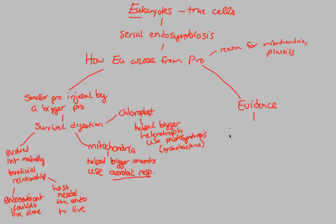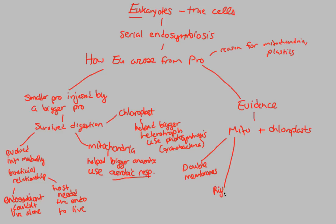Our evidence comes from looking at mitochondria and chloroplasts themselves. Both are physical pieces of evidence. Mitochondria possess a double membrane — something that tells you they once must have lived alone. They are also the right size, the same size as an anaerobic bacteria. In addition, both mitochondria and chloroplasts use similar enzymes to other bacteria — they have very bacteria-like enzymes.